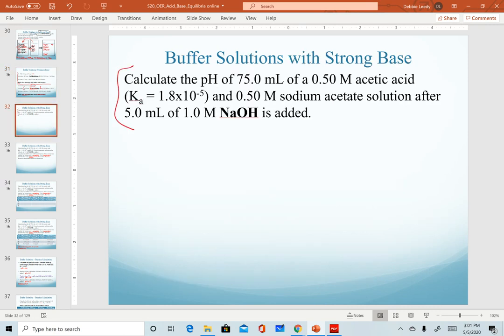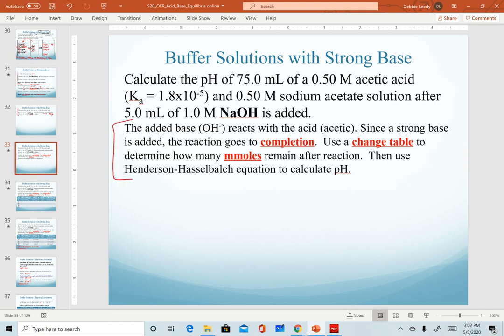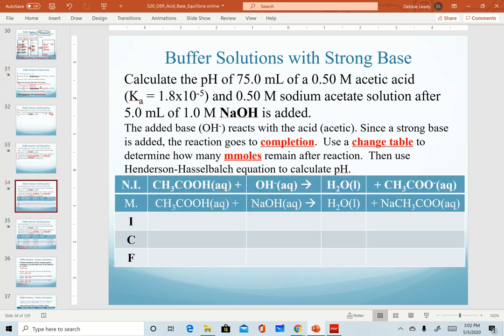So we're going to work through this problem. Since we're adding a strong base, we have a reaction that's going to go to completion, which means we need to use a change table. That description is here in this paragraph, using a change table. I'm going to stick with using millimoles. So here's our change table. On the second line is our molecular equation. And below each one, I'm going to calculate the millimoles to use.